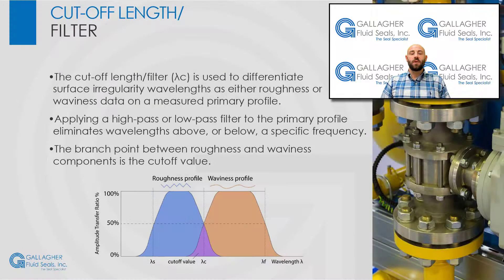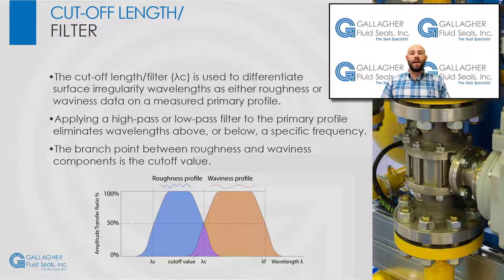When we filter, we are essentially separating the roughness and waviness profiles from a measured surface profile. Now, let's turn our attention to the cutoff length or cutoff filter, which is used to differentiate surface irregularity wavelengths as either roughness or waviness data on a measured primary profile. As you can see in the below graph, the intersection between roughness and waviness components is the applicable cutoff value, or lambda c.